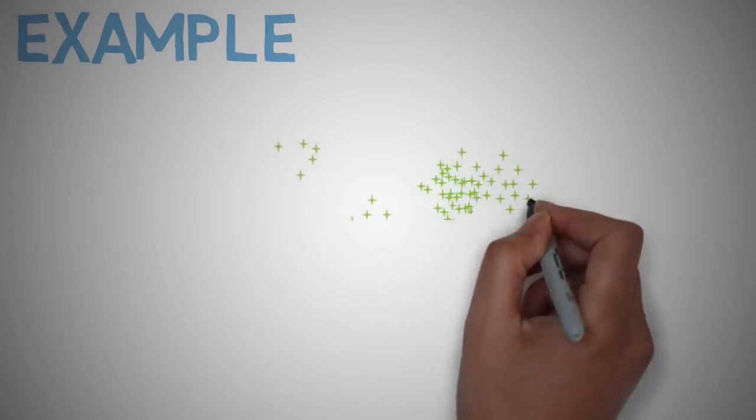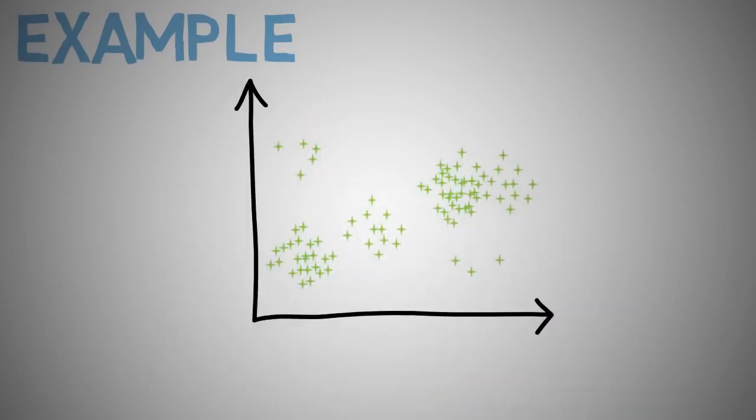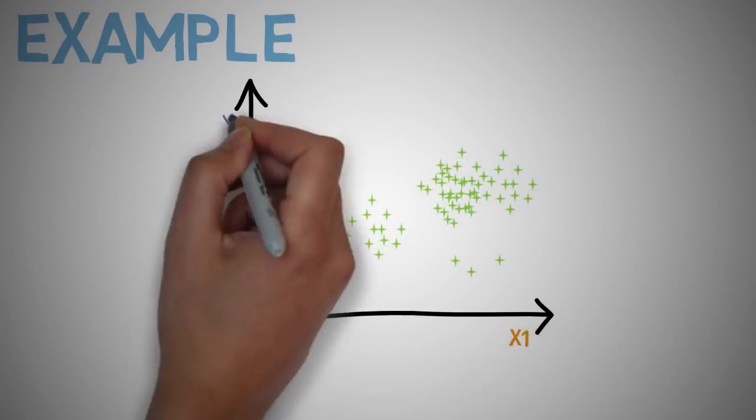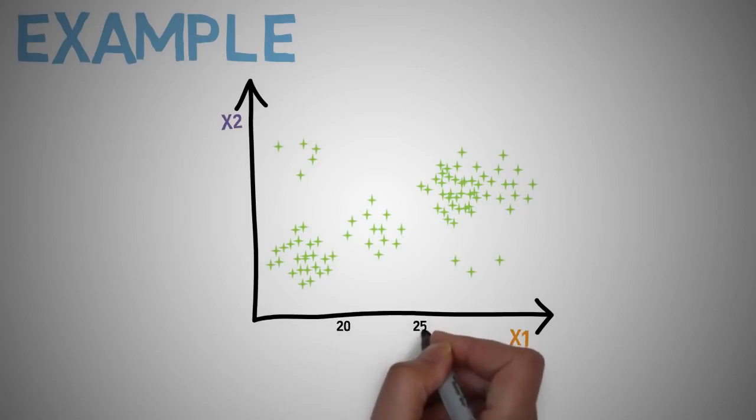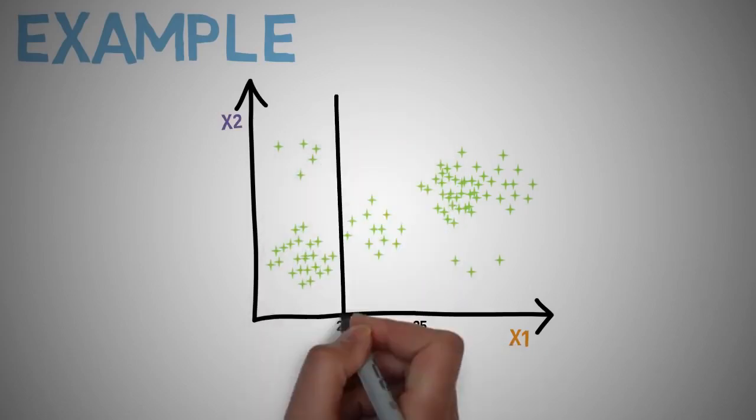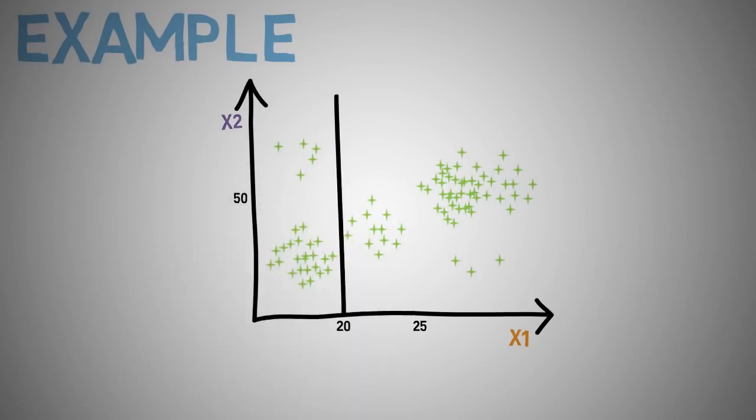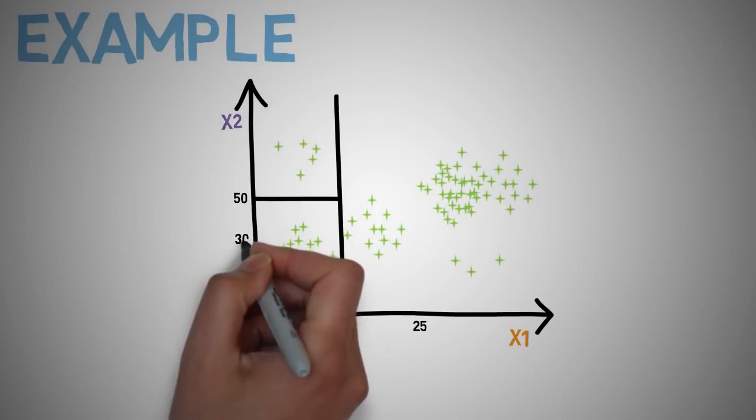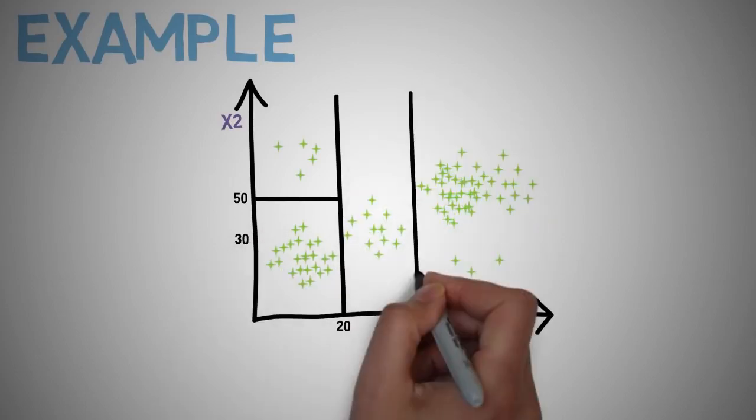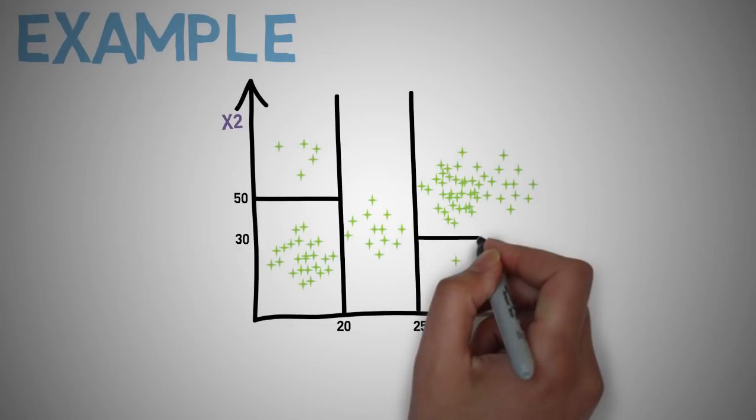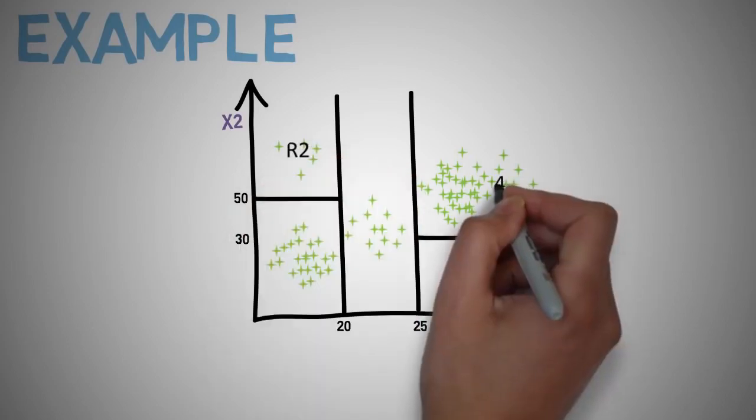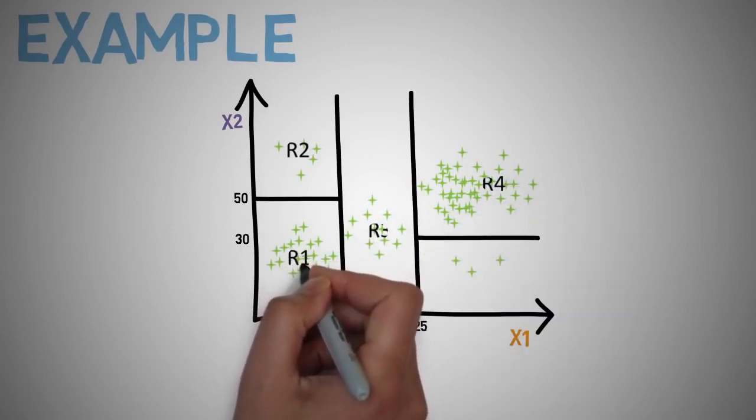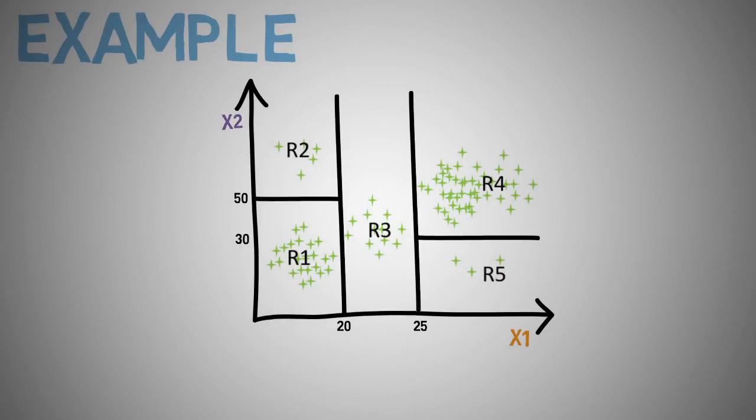Let's gain an intuition of how splitting the data would work if we had to do it manually. We have arbitrarily generated data with x1 and x2 which are our independent variables. We can split it into five regions: we can draw a line at x1 equals 20, x2 equals 50, then another one at x1 equals 25, and a last split at x2 equals 30. So we have regions r1, r2, r3, r4, and r5.